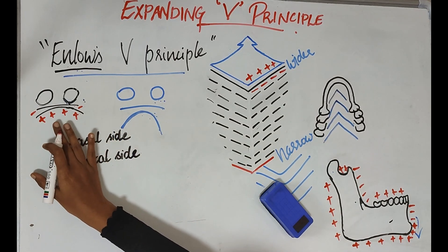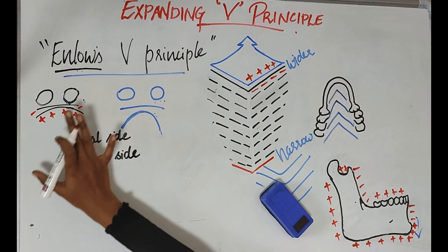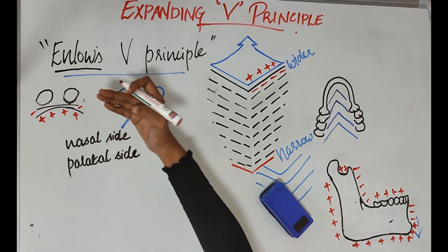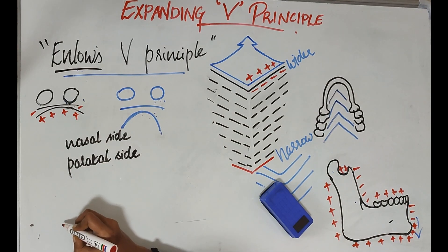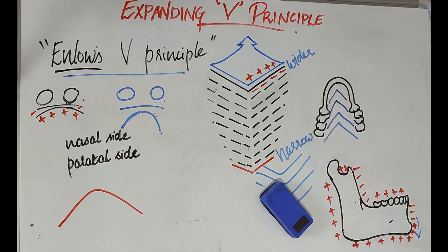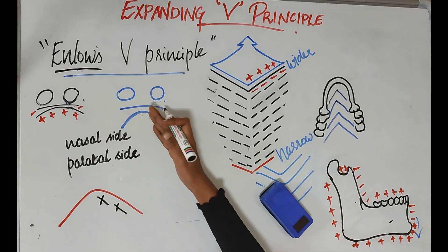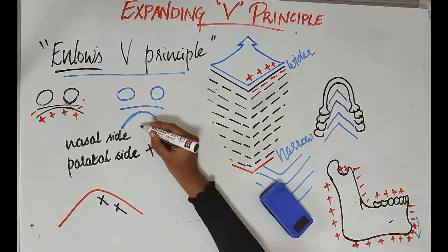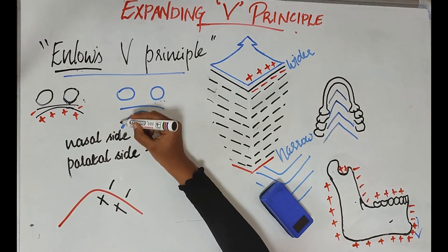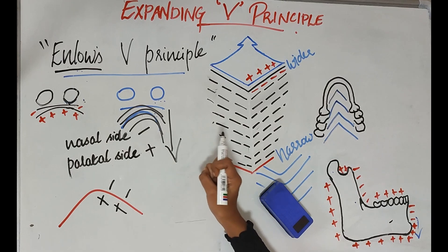This rough diagram shows a section of a younger child, in whom the palate and nasal floor are close to the infraorbital rim. As development happens, there is a descending down of the palate. Considering the palate as a V shape, bone deposition occurs on the inner aspect — the palatal side — and bone resorption on the outer aspect toward the nasal surface. As this happens, the palate moves downward, which is how palatal growth occurs following the expanding V principle.